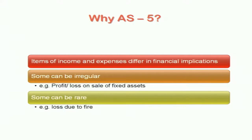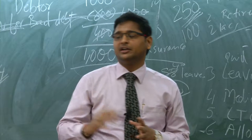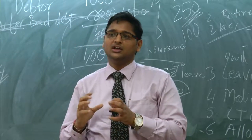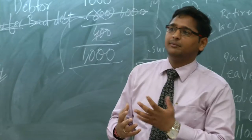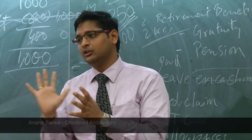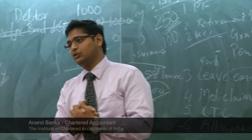Basically, items of income and expenditure differ in their financial implications. Some items are very irregular, some are regular. Like sale of fixed assets is not a regular item — you do not do it every year. Loss due to fire is a rare item; it might not happen in 10 or 15 years. So based on the regularity and nature of the item, you should categorize those items and disclose them in your financial statements or income and expenditure account.